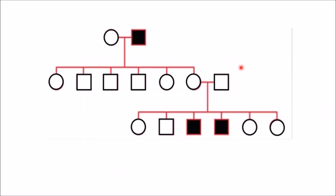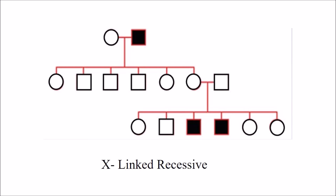In this pedigree chart, skipping of generation is seen, so it is recessive. There is no male-to-male transmission, so it could be X-linked recessive or autosomal recessive. However, males are more affected than females, therefore it is an X-linked recessive disorder.